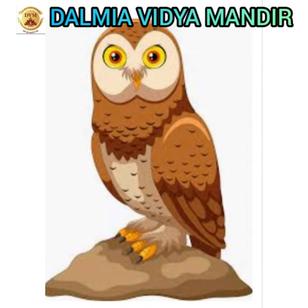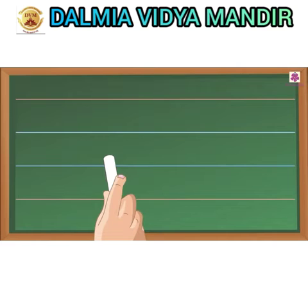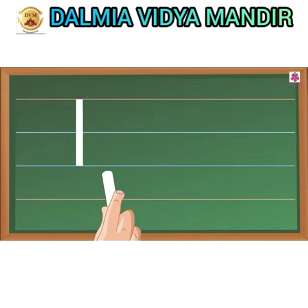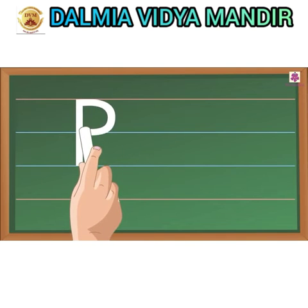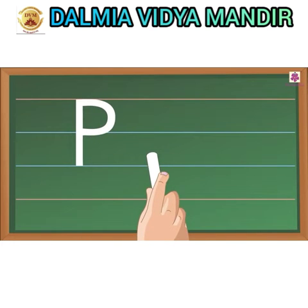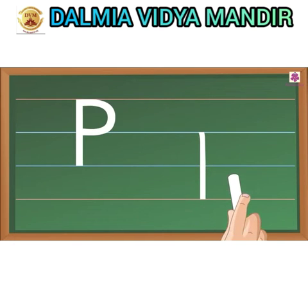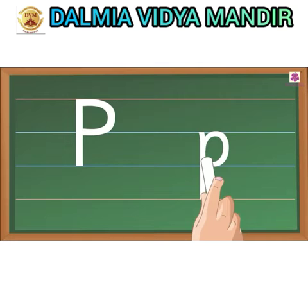Next letter P. Come on, let's see letter P. Capital P — start from the top and draw a standing line down, then go again to the top and draw a curve up to the middle. Small P — start from the middle and move down below the bottom, then go to the middle and make a half circle to meet the line at the bottom.